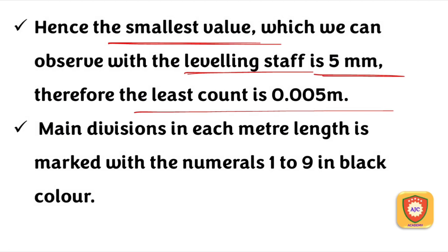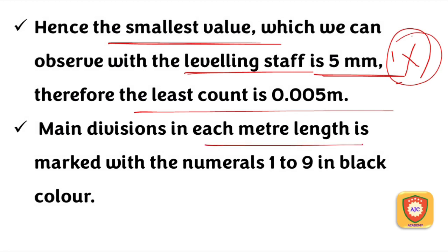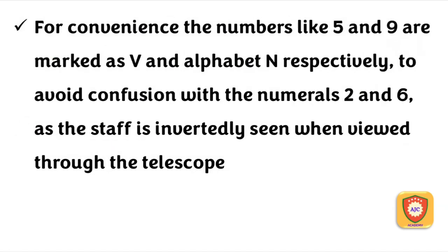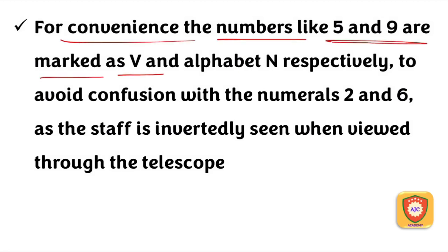The least count value of the leveling staff is 5 mm, which equals 0.005 m. This is the smallest reading value. Because the staff is read through an inverted telescope, the numbers appear inverted, so letters like V and N are used instead of numerals to avoid confusion.